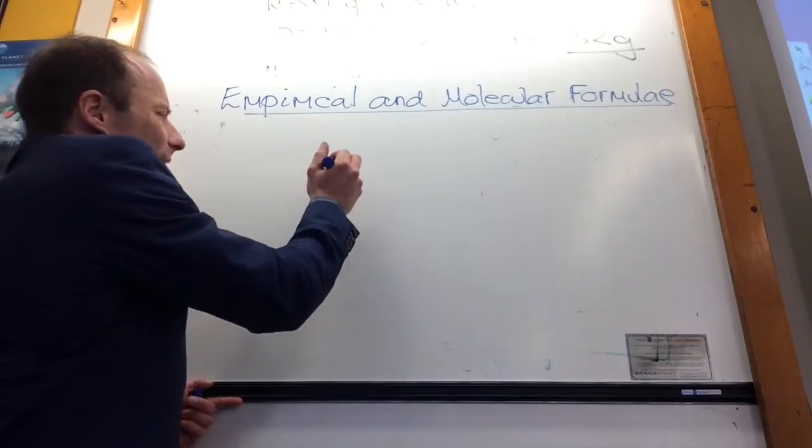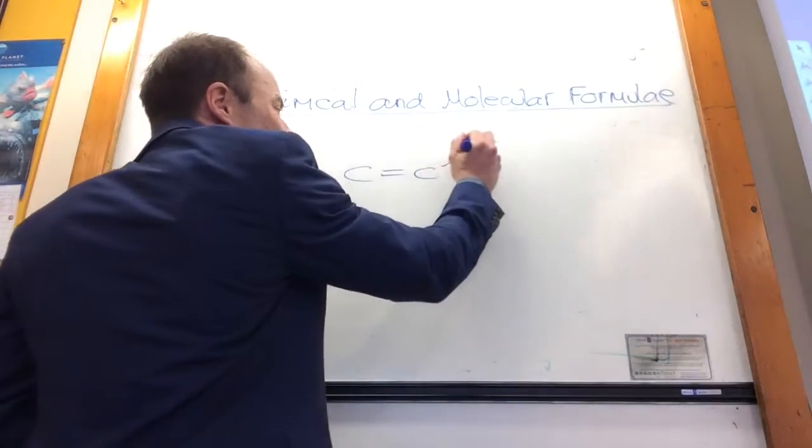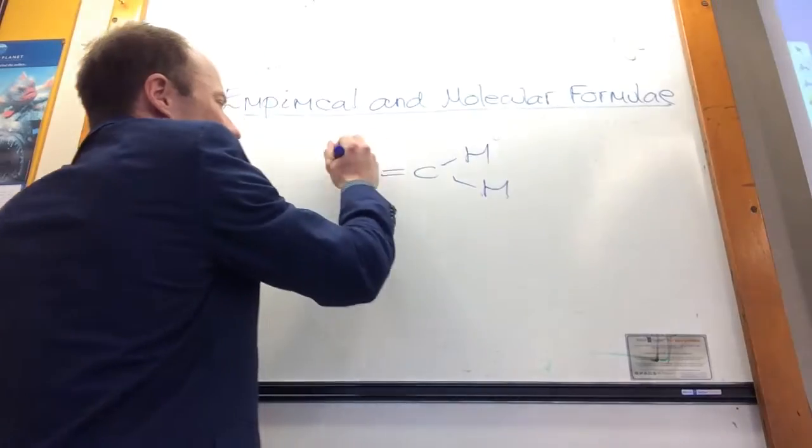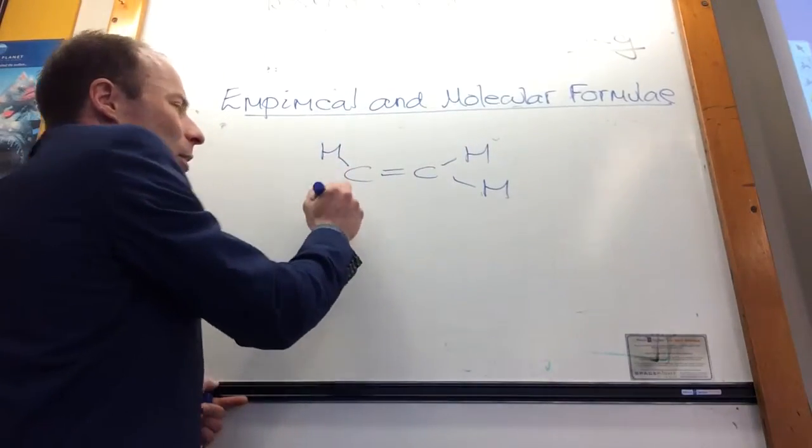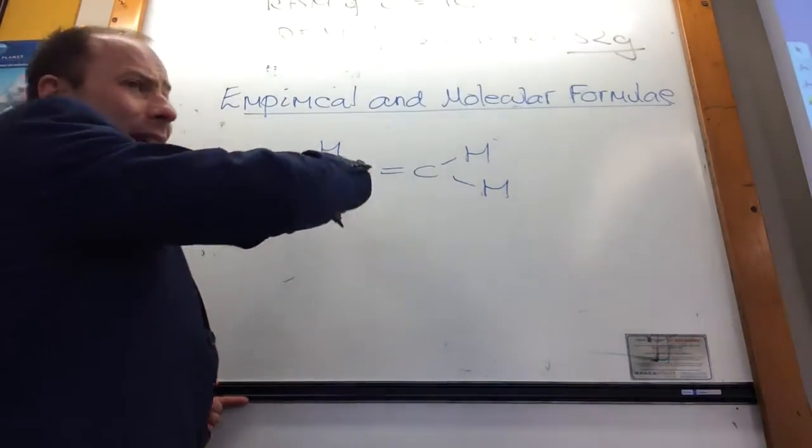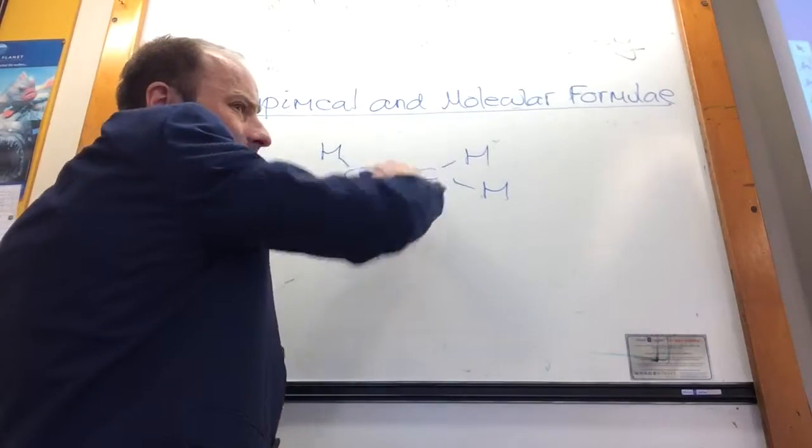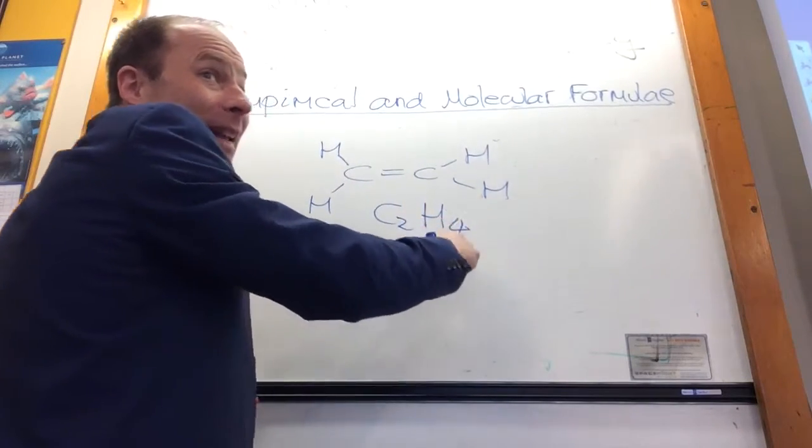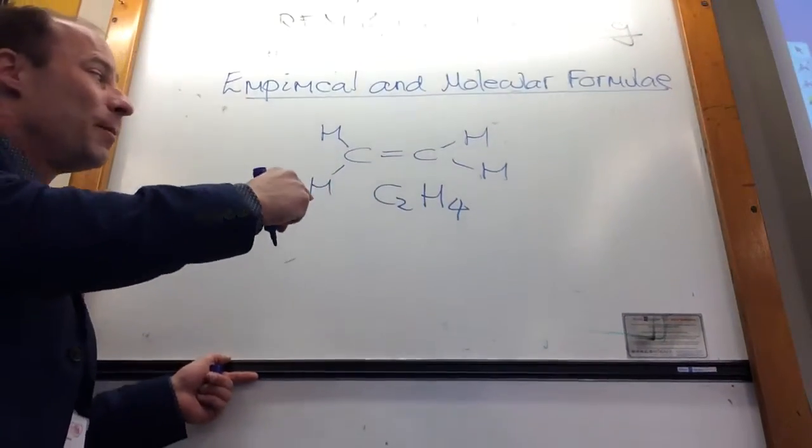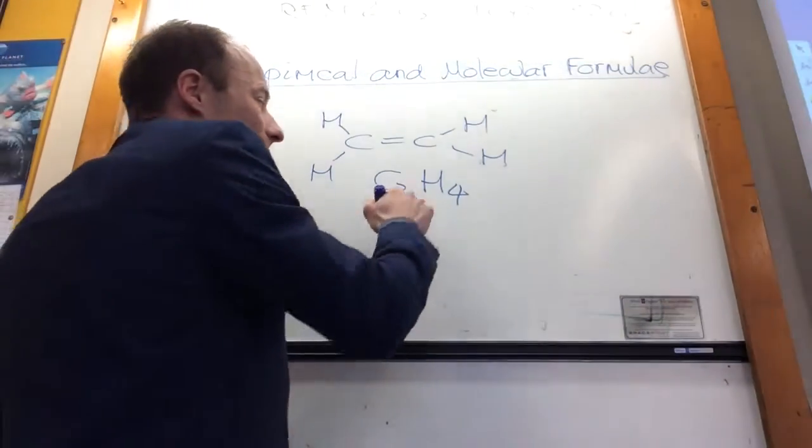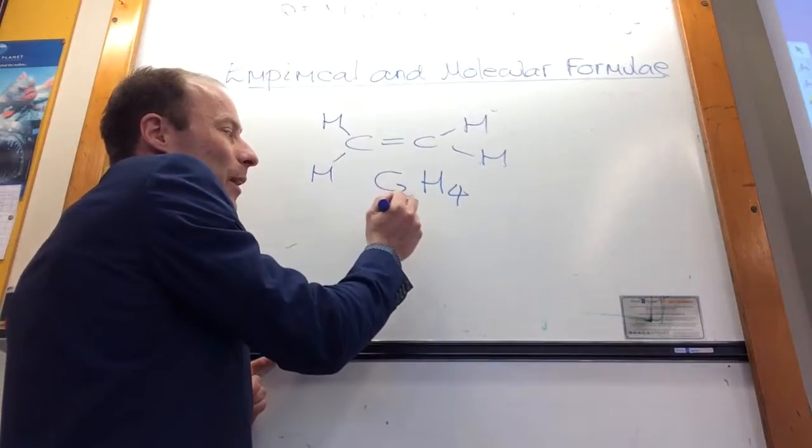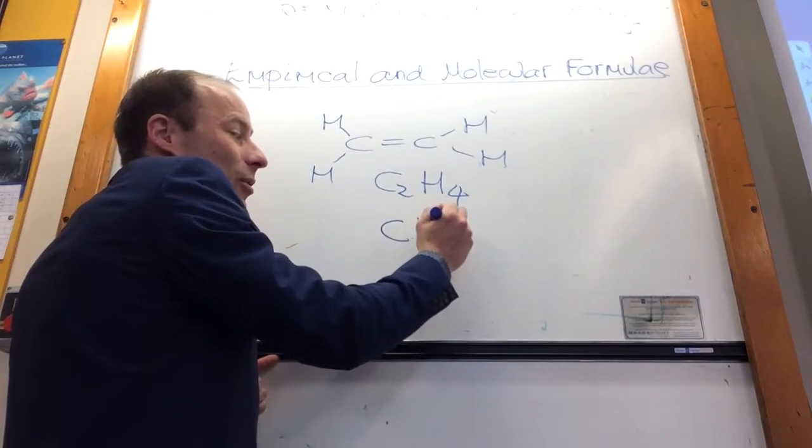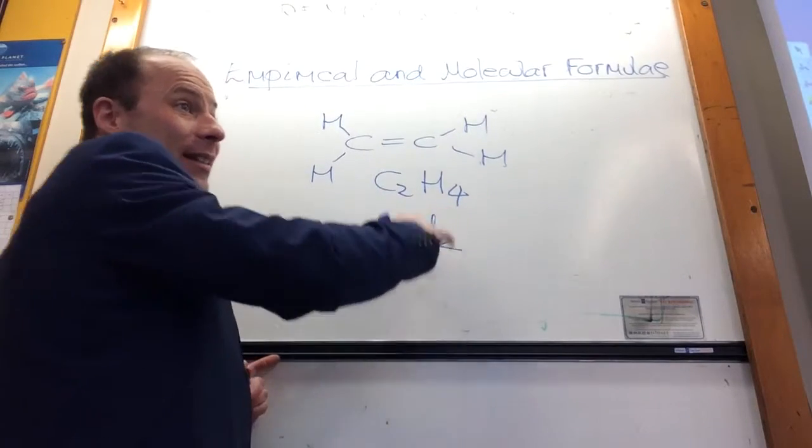So let's say I have got ethene, which is this guy here. The molecular formula, that's all the atoms in, would be C2H4. That's a molecular formula. That's actually what's in it. But the empirical formula is the simplest ratio, which is CH2. So that's the simplest ratio.